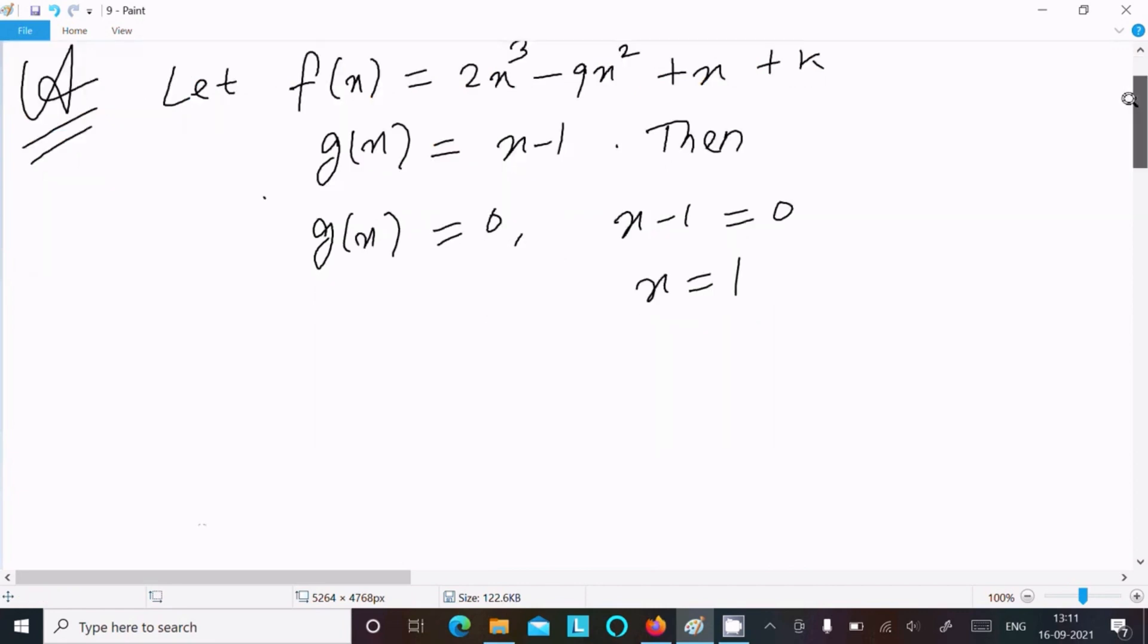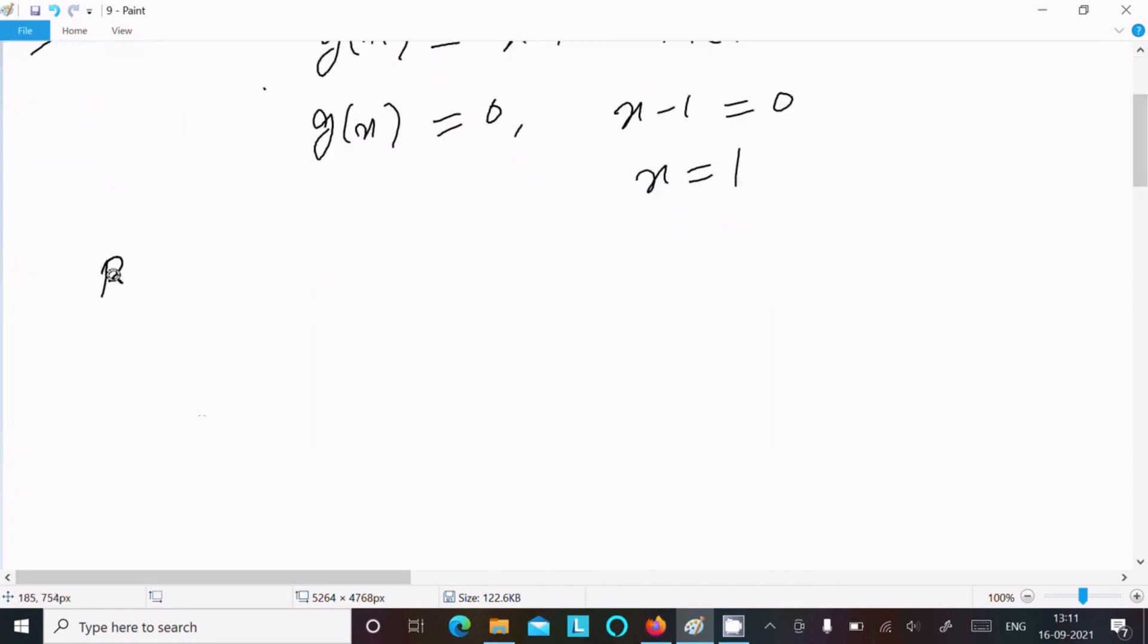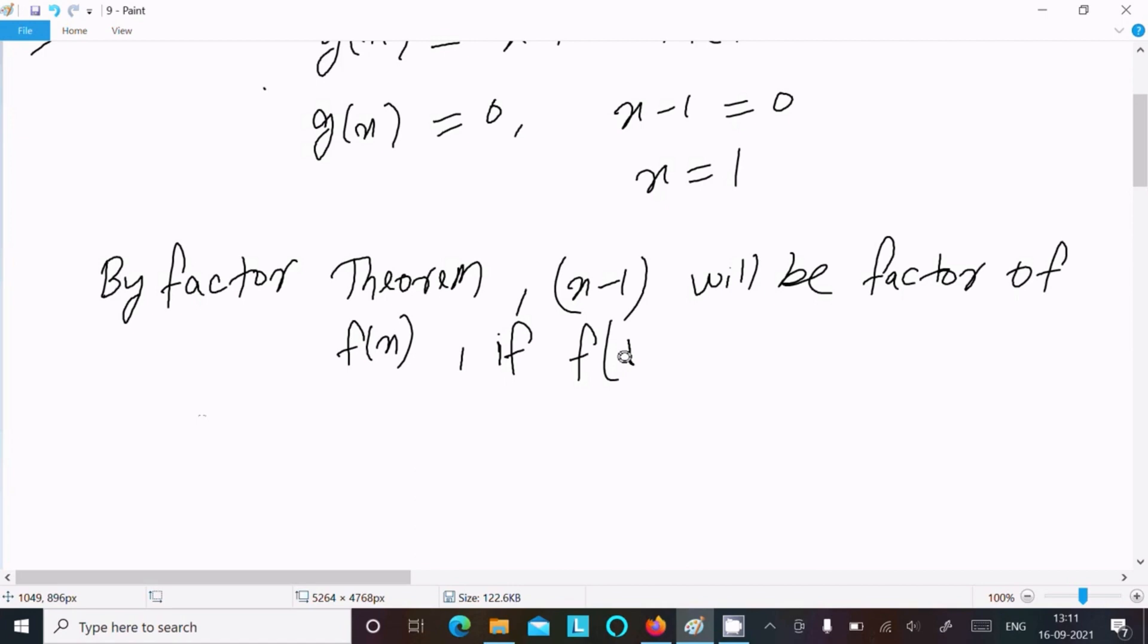After that, by using factor theorem, x minus 1 will be factor of f(x) if f(1) equal to 0, that means remainder equal to 0.